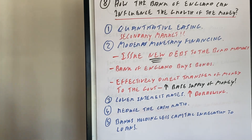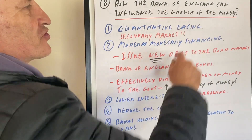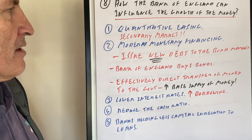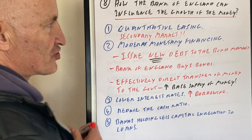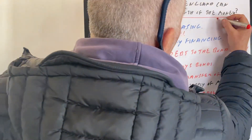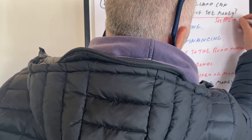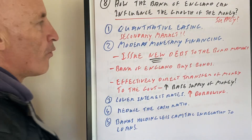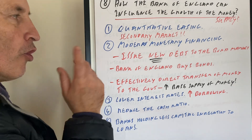Video number eight: how can the Bank of England influence the growth of the money supply? Number one, quantitative easing — they can buy bonds in the secondary market.